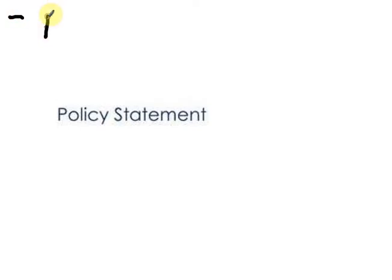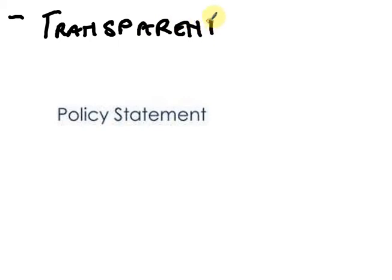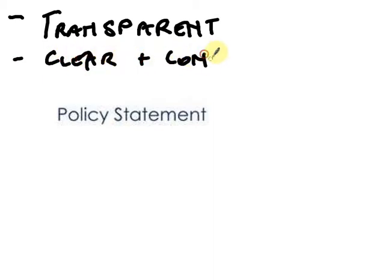We've already stated back in the background that we need to have this level of transparency. It goes through the whole document and this will probably be the last time I really write it up because it's a long word. We need to make sure that what we say is transparent. We need to make sure that what we say is clear and concise. If it rambles on and it takes ten pages to say what we want to say, people are going to lose interest and they're going to get confused.